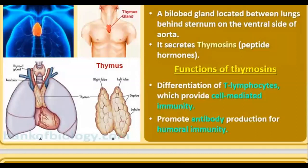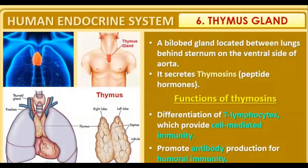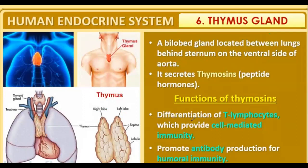The next gland is the thymus gland. The thymus gland is a bilobed gland located between the lungs, behind the sternum, on the ventral side of the aorta — above the heart. It has a right lobe and a left lobe. The thymus gland secretes thymosin, which helps in the differentiation of T-lymphocytes for cell-mediated immunity and promotes antibody production for humoral immunity.